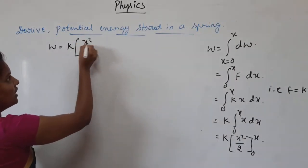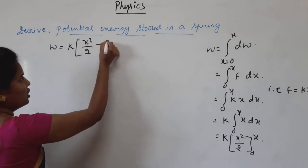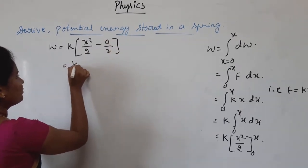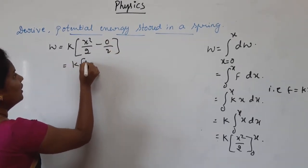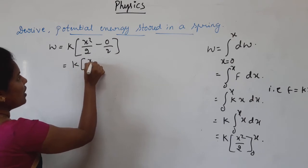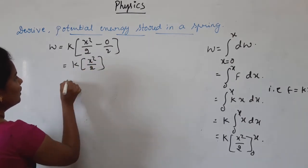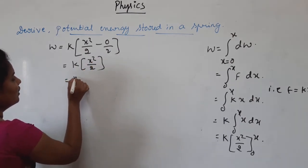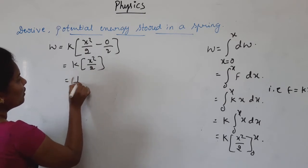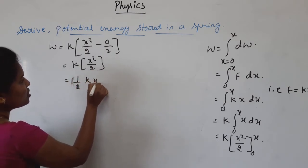Applying the limits from 0 to X: upper limit gives X squared divided by 2, minus lower limit which gives 0. That is, W equals half KX squared.